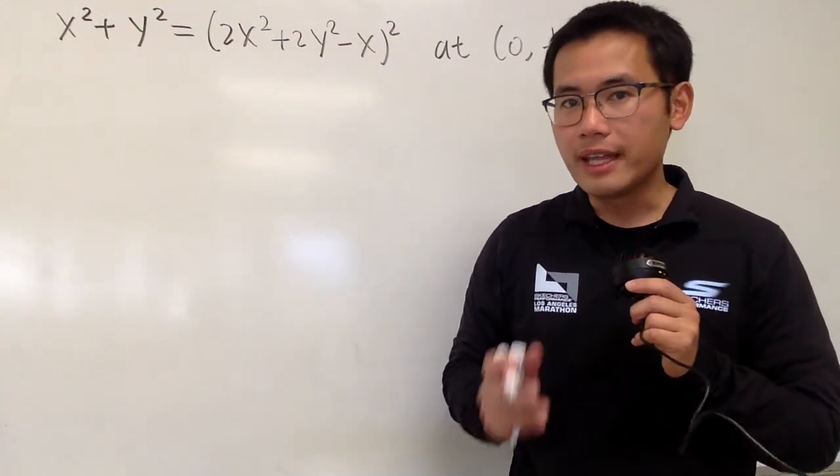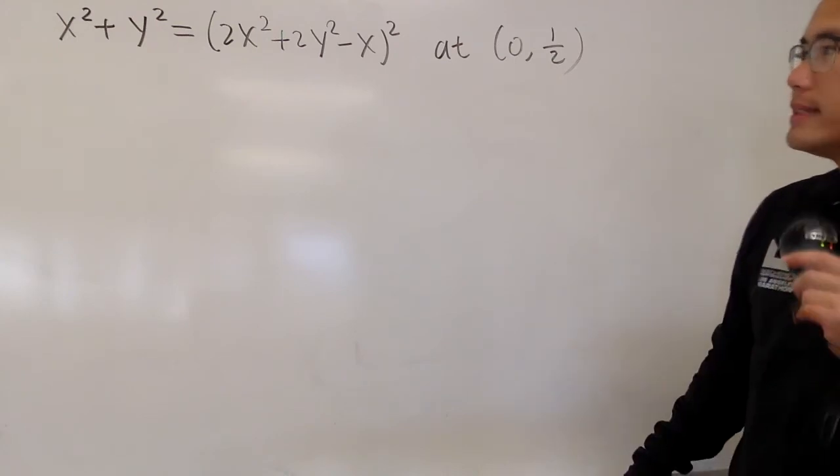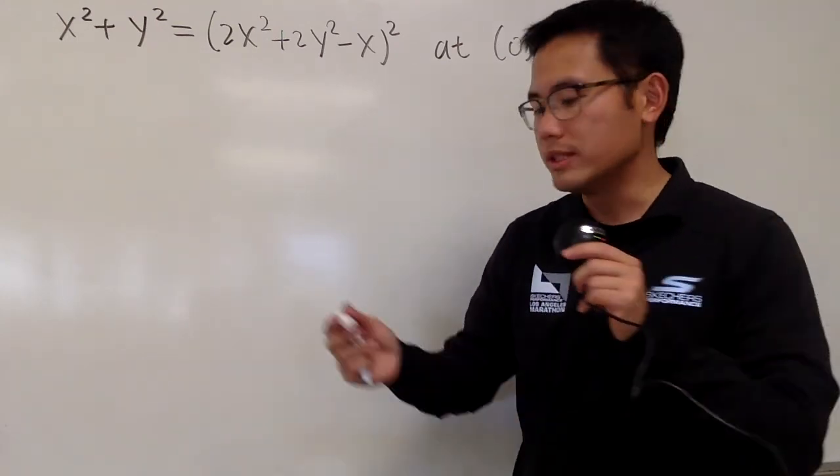Okay, we are going to find the slope of the line tangent to this curve at this point. Well, the y is not isolated, but don't worry, we can use implicit differentiation.